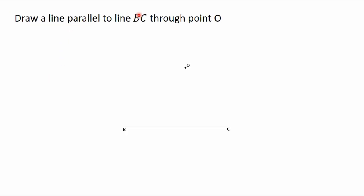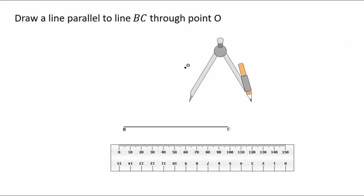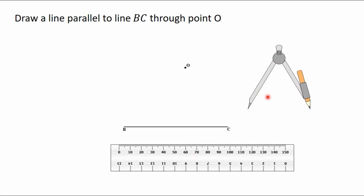Draw a line parallel to the line BC through point O. So we have the line BC here and this is point O which falls outside the line BC. We are going to draw a line parallel to BC through O. We will need a ruler and a compass in this construction, so I'll bring the ruler and the compass. I have the ruler and a compass here.